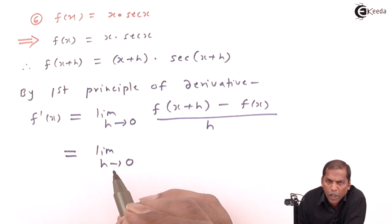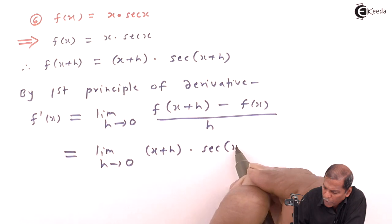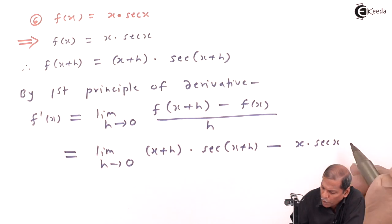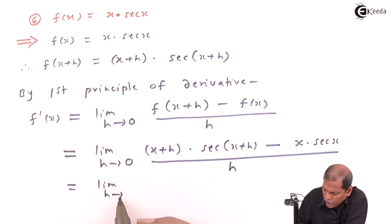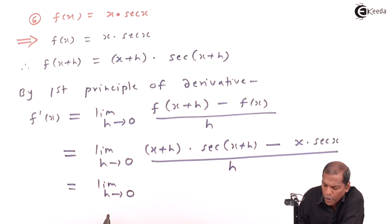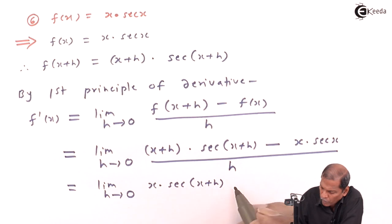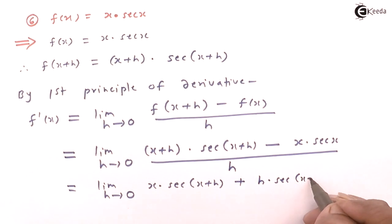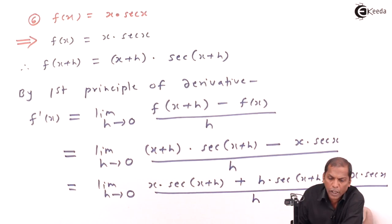Now for f(x+h) we substitute (x+h)·sec(x+h), and for f(x) we substitute x·sec(x), and then divide the whole thing by h. Opening the bracket, we get x·sec(x+h) plus h·sec(x+h), minus x·sec(x), all divided by h.